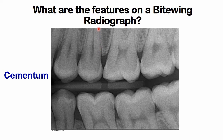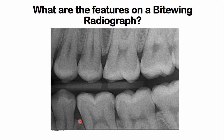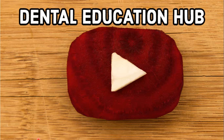The root is covered by cementum. The part of the alveolar bone between teeth is the interdental bone — you can see the interdental bone here. In this area, there is some bone loss visible. Thank you very much for watching; please give us your feedback in the comments below, and stay blessed.